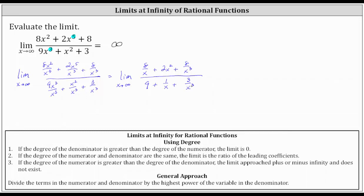Now from here, remember: when we have a fraction where the numerator is a constant and the denominator approaches positive or negative infinity, the value approaches 0. So 8 divided by x approaches 0 as x approaches infinity. 2x squared approaches infinity as x approaches infinity. And 8 divided by x cubed approaches 0 as x approaches infinity.